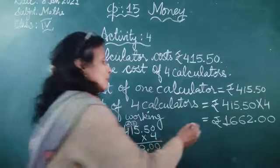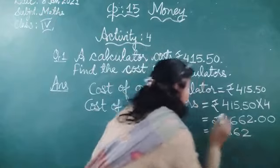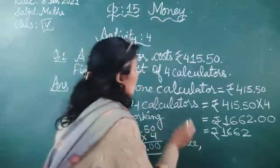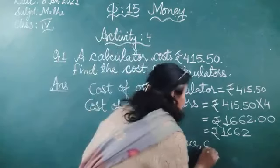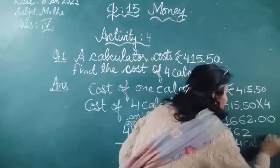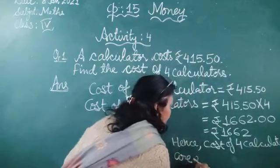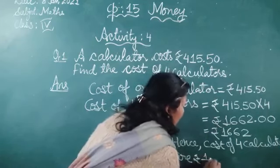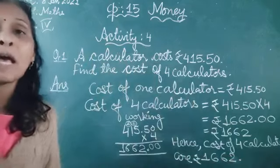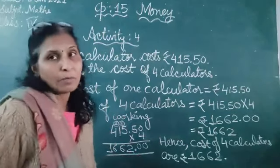Point zero zero means no value, so we write only 1662. The cost of four calculators is rupees one thousand six hundred sixty two. This is your answer. In this way, we can solve the statement problem.